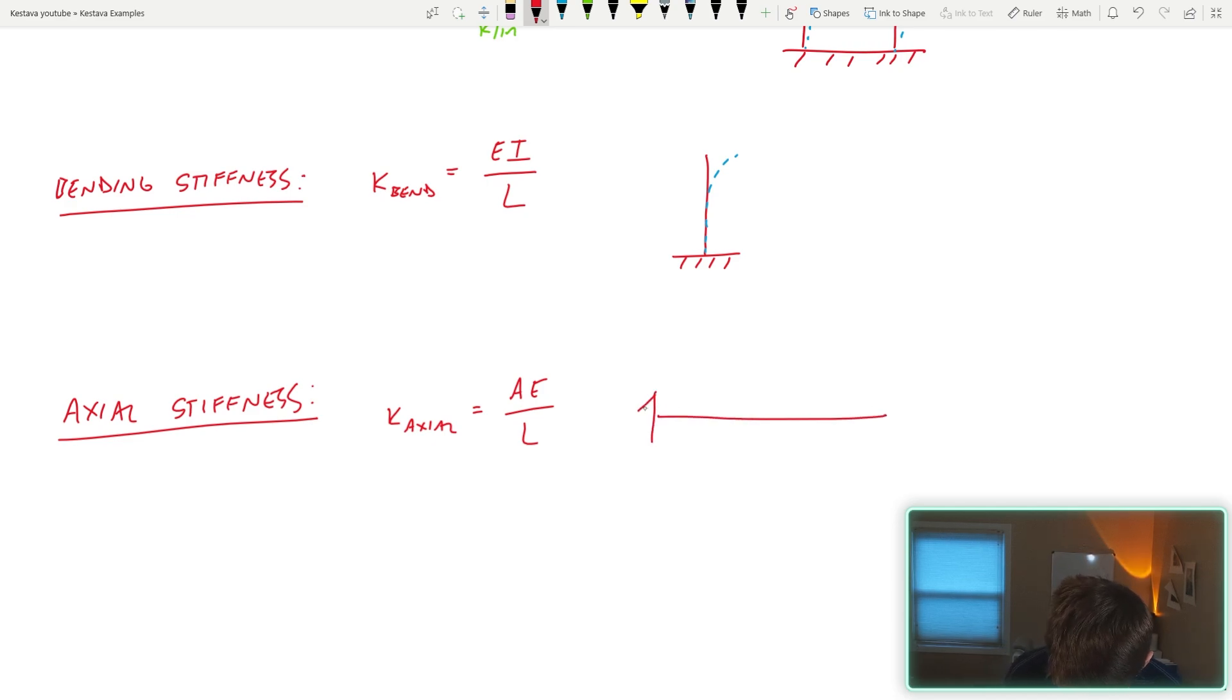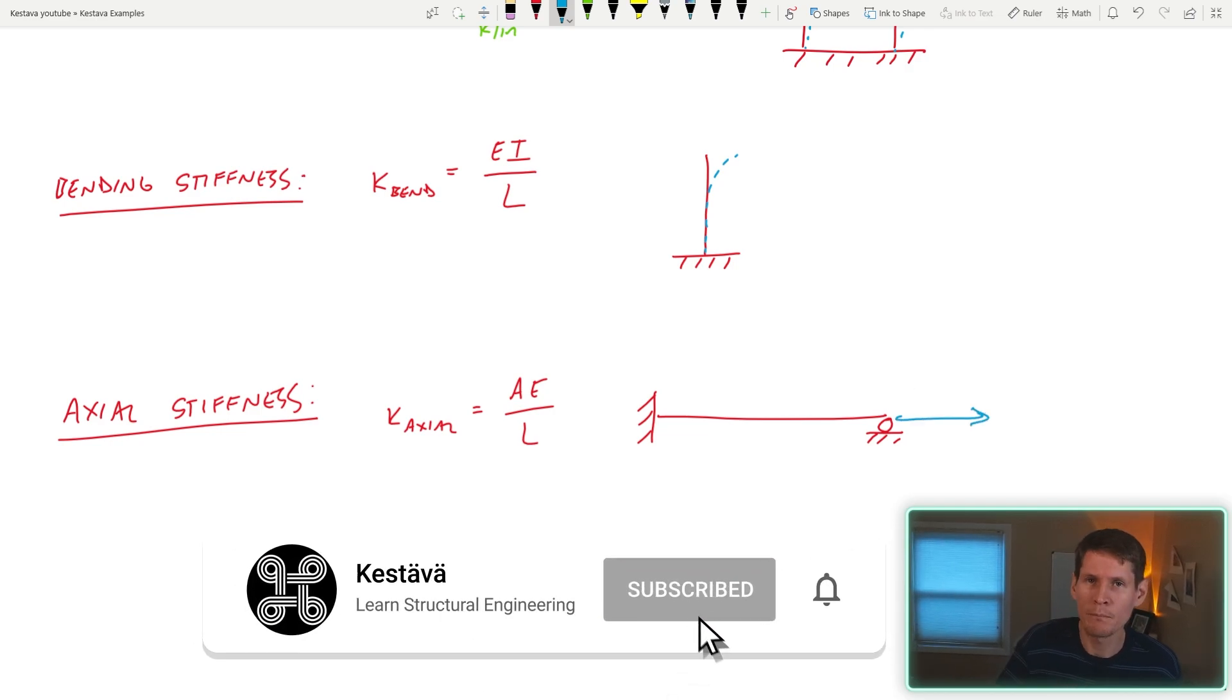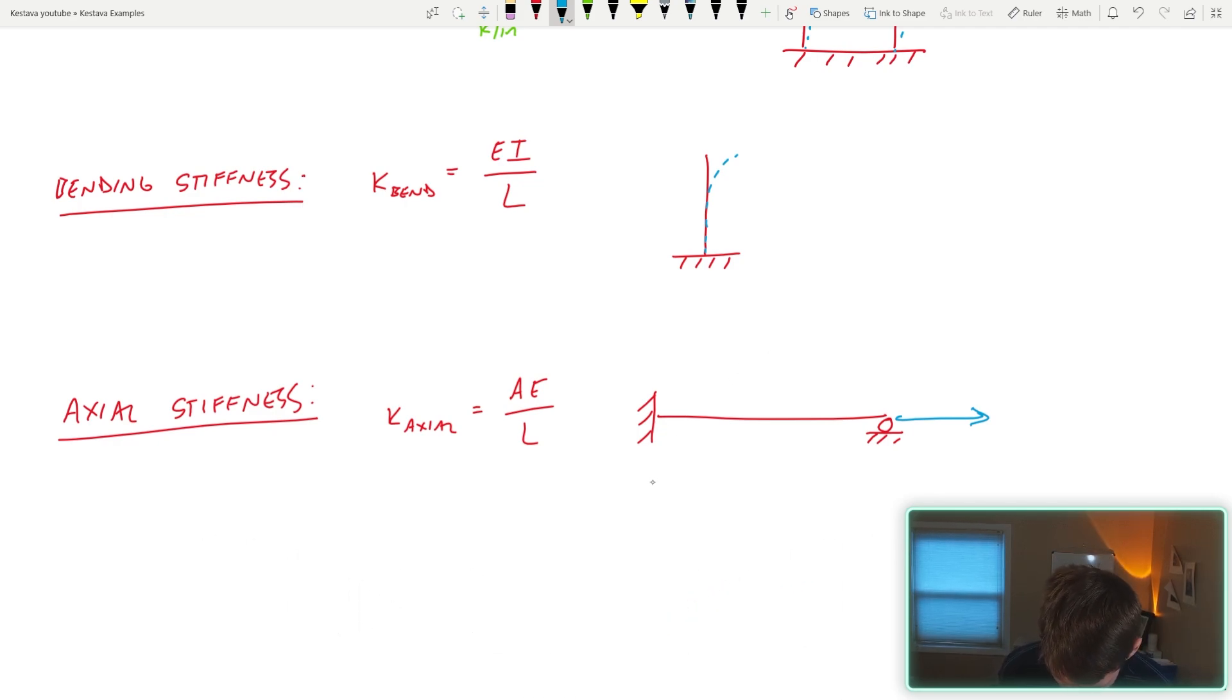In this instance, we flip our cantilever on its side. Let's put a roller here so it's not a pure cantilever, and we're applying a force, pulling on that member. That member is going to get longer by some amount, and that amount is your displacement, which is your delta. That is dependent upon the stiffness, K, of your member, and that overall displacement is also dependent upon the amount of force, F, that you apply to your system.